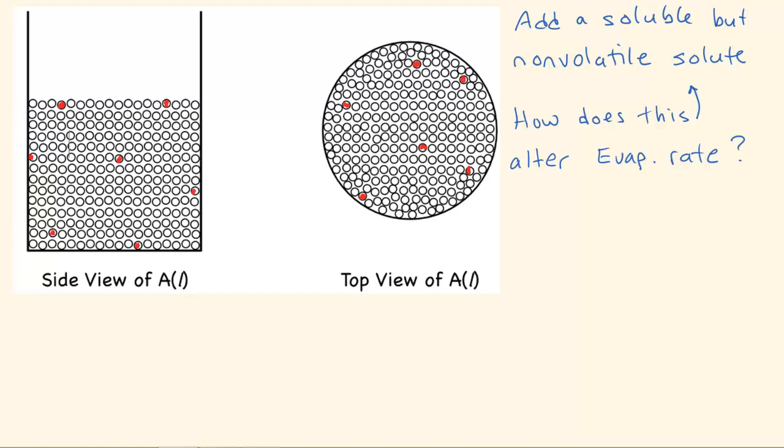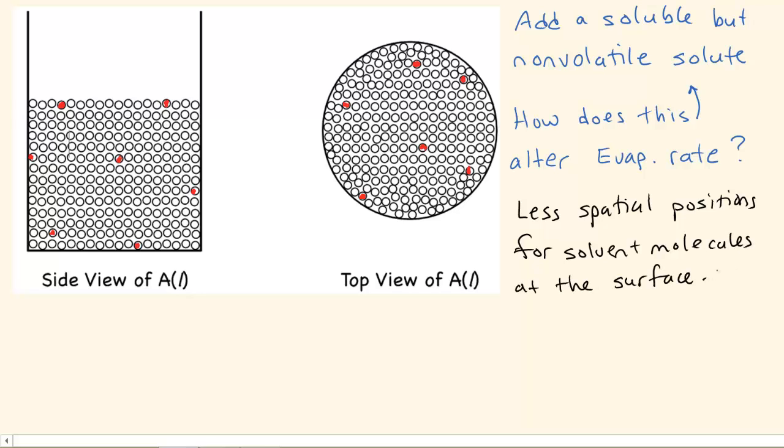All right, so we're going to add this stuff. And as you see, I've kind of put these in here already. There's some solute in here. And just by taking a look at this picture, you should immediately see that there is less positions for solvent molecules, less spatial positions. So by having less spatial positions at the surface, what's that going to do to the evaporation rate? Because that's what we really want to know.